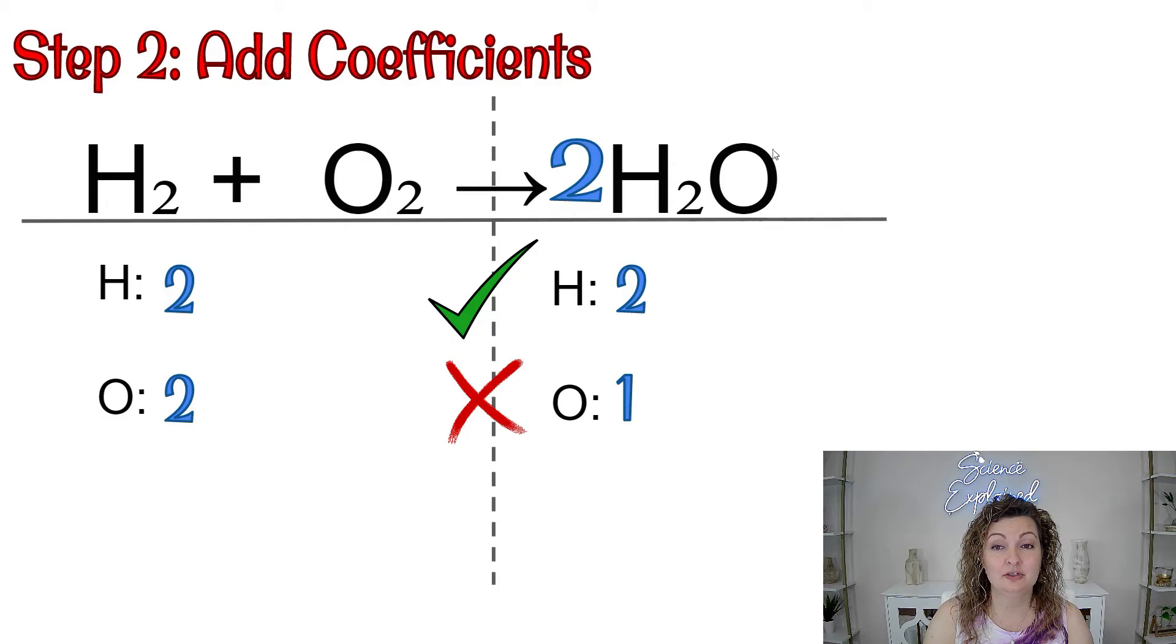That will give me two oxygen because I'm going to use the distributive property and multiply this two by the understood one that is here, but that will also change our hydrogen because this two is also distributed to our subscript two and is multiplied. So two times two is going to give me four hydrogen, and it will give me that two oxygen as I distribute it throughout the whole compound.